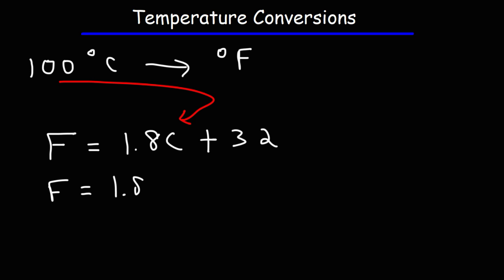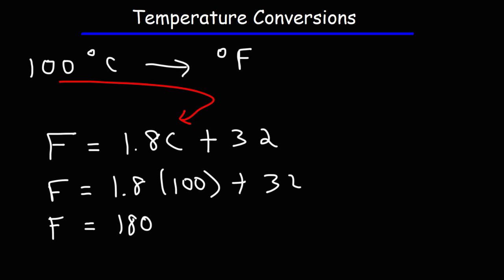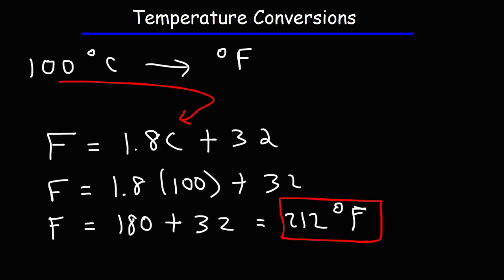So it's going to be 1.8 times 100 plus 32. 1.8 times 100 is 180, and 180 plus 32 is 212. So 100 degrees Celsius is equal to a temperature of 212 degrees on the Fahrenheit scale.